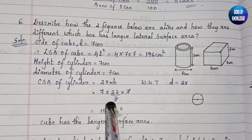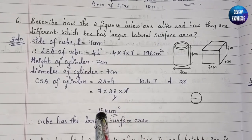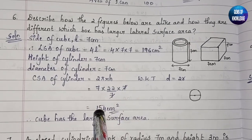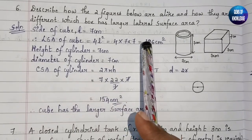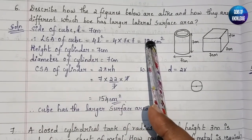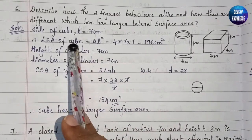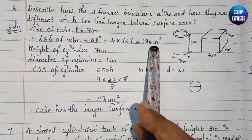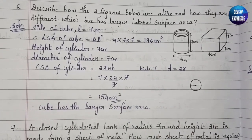The sevens cancel, giving 7 × 22 = 154 cm². So the CSA of the cylinder is 154 cm² and the LSA of the cube is 196 cm². Therefore, the cube has the larger lateral surface area.